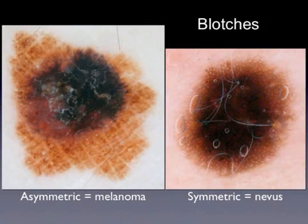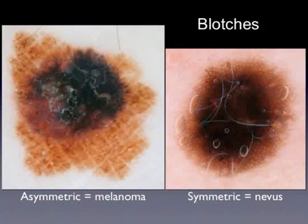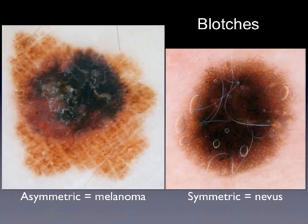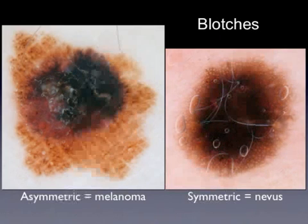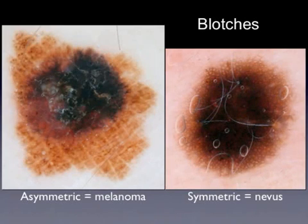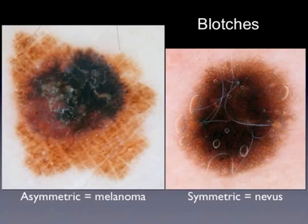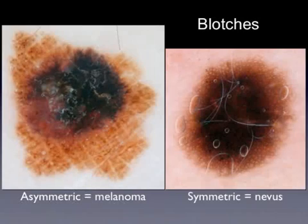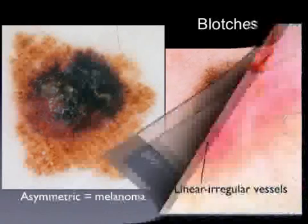The next feature is the so-called blotches. These are areas of structureless pigmentation of brown to black color. In melanoma, blotches are asymmetrically distributed, whereas in nevi they are usually located in the center, as is the case of this black nevus here on the right.